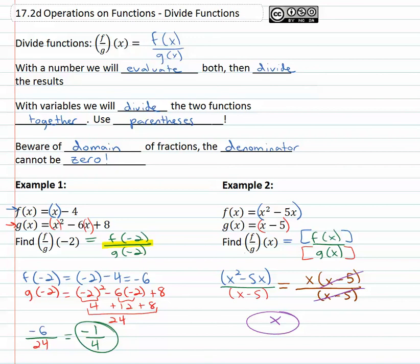However, we have to be careful of something with fractions—the domain. The denominator cannot be zero, which means in my original problem that denominator x minus 5 cannot be zero. So if I add 5 to both sides, we find out x cannot be equal to 5.